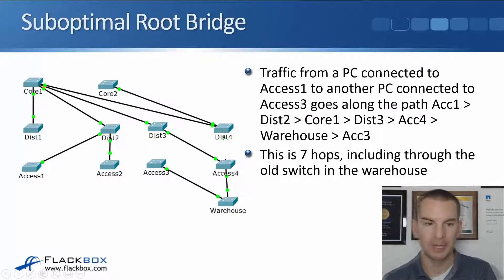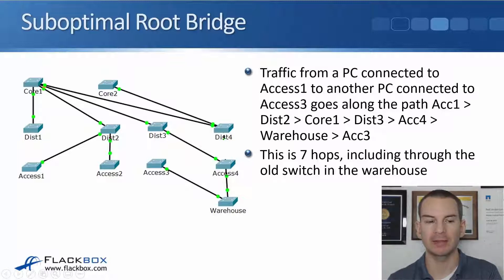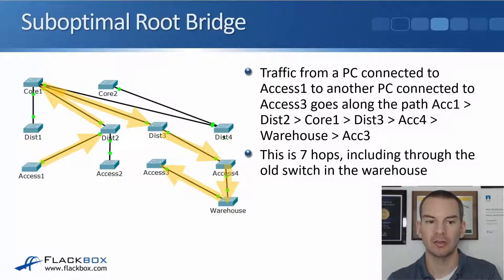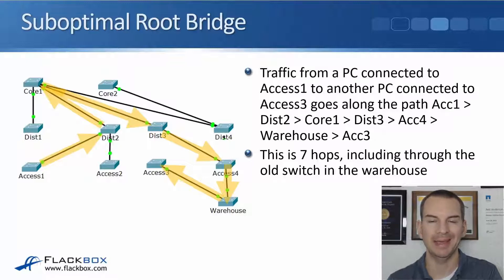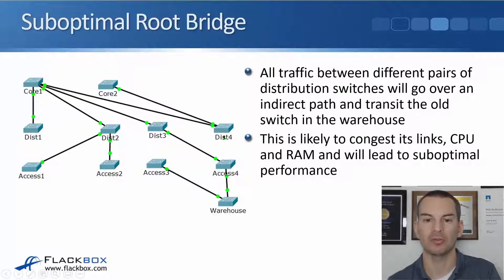Let's see what would happen if we had a PC connected into the Access 1 switch on the left, and it sent traffic to the Access 3 switch over near the right-hand side. Access 1 will send it to Distribution 2, then to Core 1, then to Distribution 3, then Access 4, then the warehouse, and then Access 3. So it's pinging around all over the network and going via the warehouse switch — 7 hops in total. So that's really a suboptimal root bridge selection.